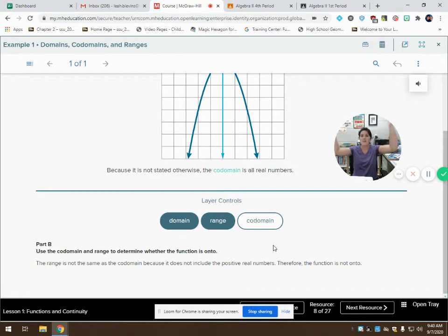The codomain says every number. Could be positive. It could be above zero. Could be less than zero. It's all numbers. So since they're not the same, that means it is not onto. It is not onto if the codomain and the range are not the same.